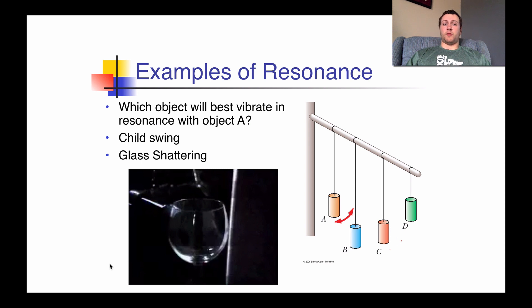So with the question being posed, which object will best vibrate in resonance with A? Well we know it's going to be C. A and C are both the same length, so they're going to have the same frequency that they're going to oscillate with because their period of oscillation is going to be the same.